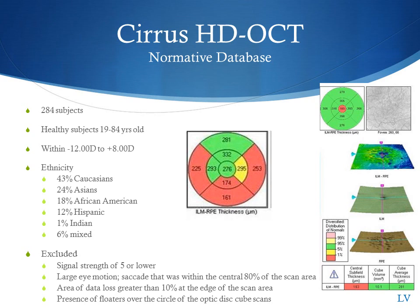Like any OCT instrument, it's important to identify the normative database. The Cirrus HD OCT is based on 284 subjects with an age range of 19 to 84 years old and a refractive error range of -12 to +8 diopters. When interpreting your macular thickness scans — looking at the ETDRS circles in the nine different sectors and your central subfield thickness — it's important to understand that your patient may not fall into this normative database. I've seen patients with outside-normal-limits or borderline findings who have a completely normal foveal contour, intact retinal layers, and no retinal pathology. So it's important not to only look at the colors, but to actually evaluate the numbers and the overall scan.